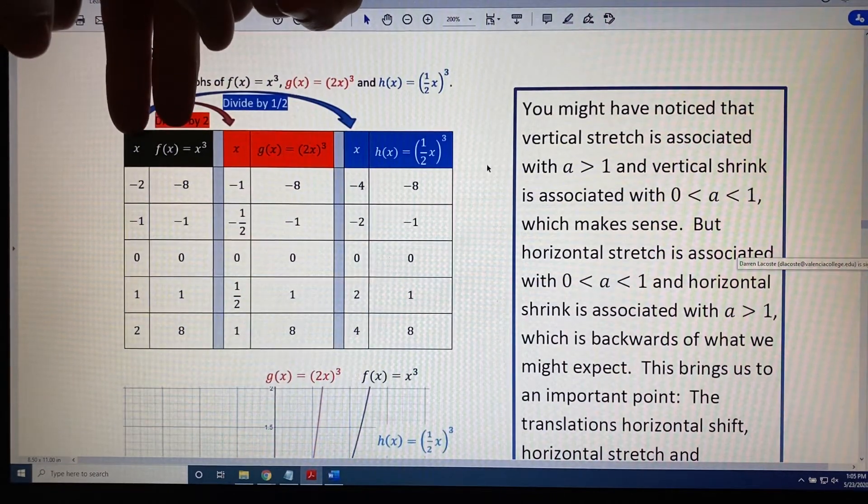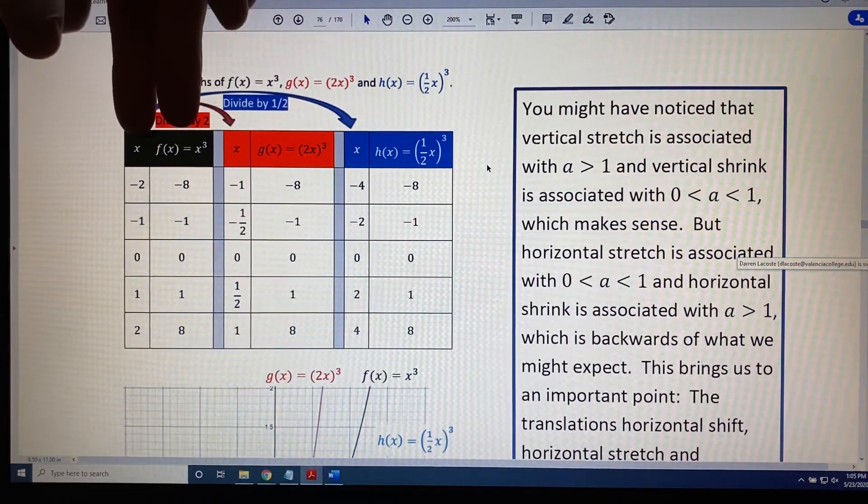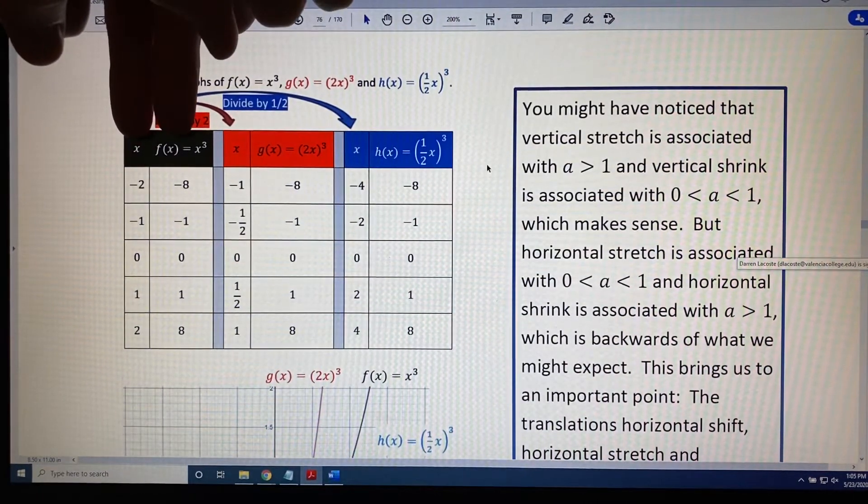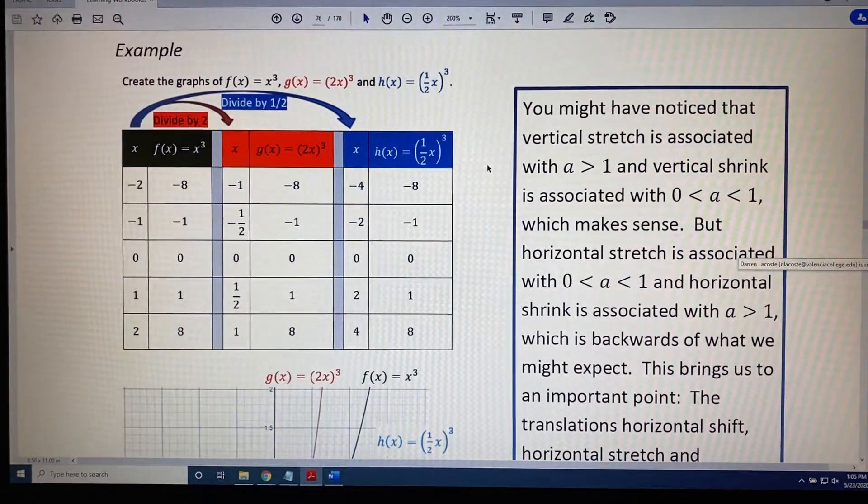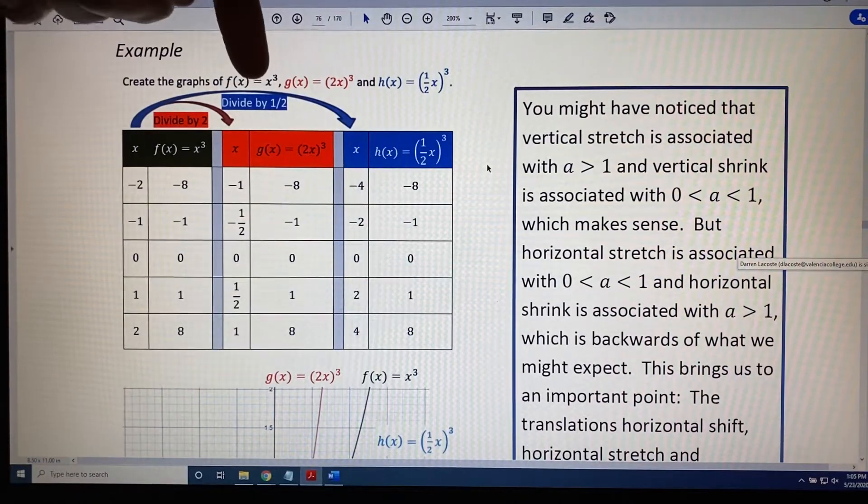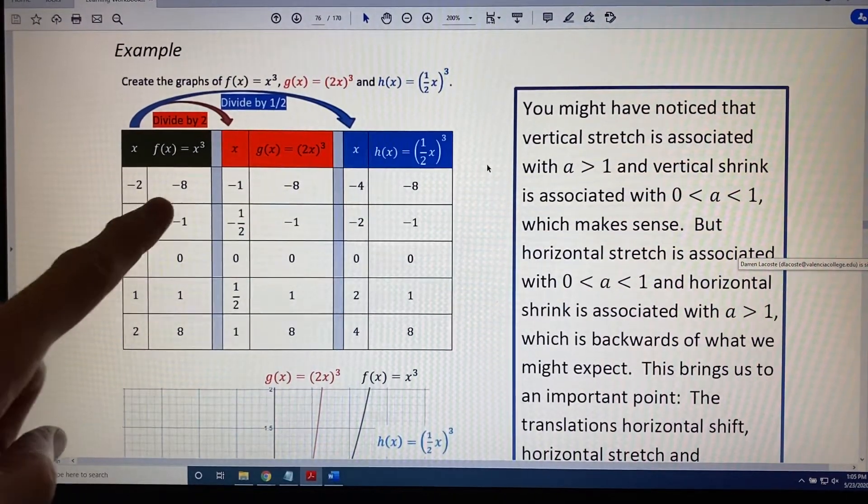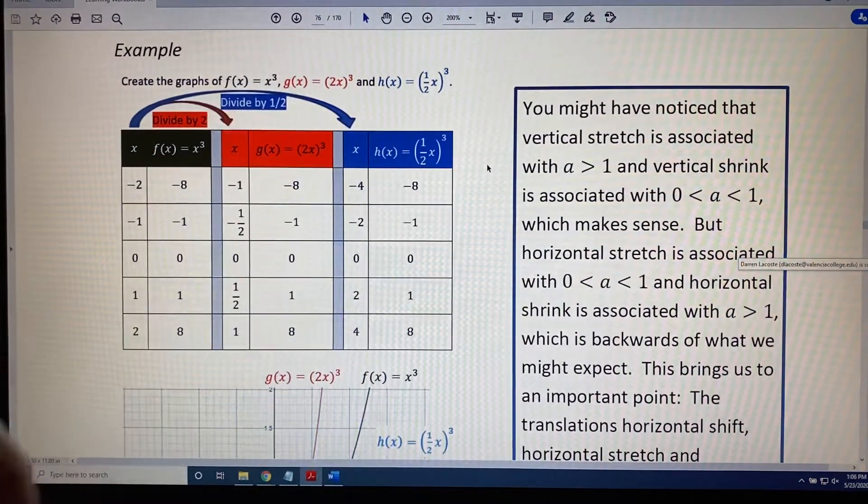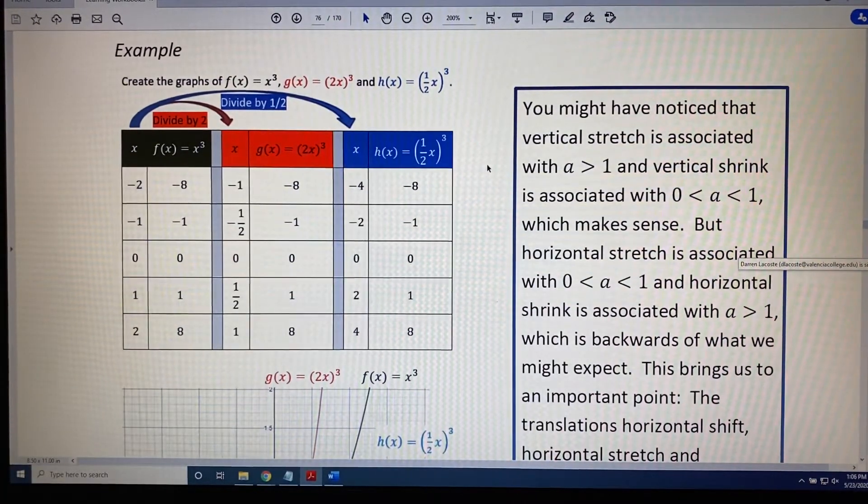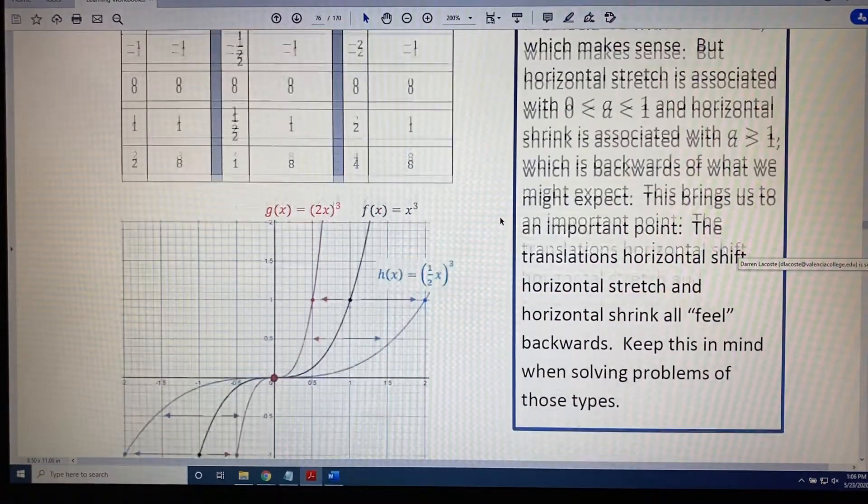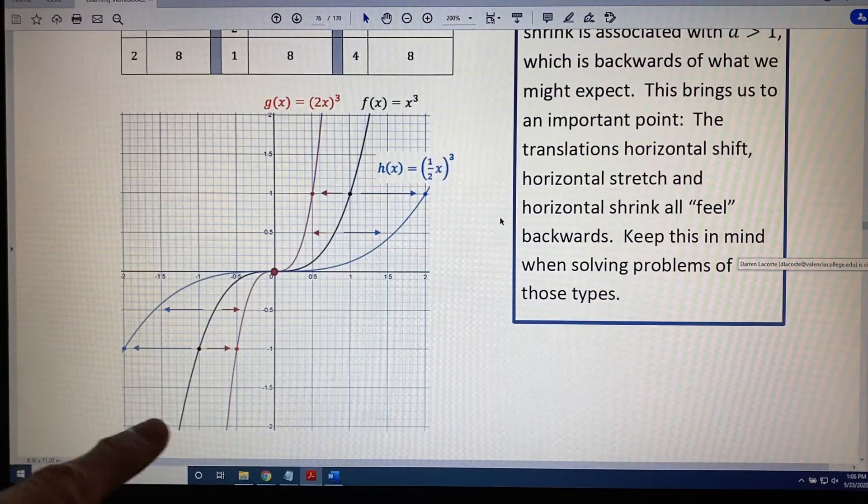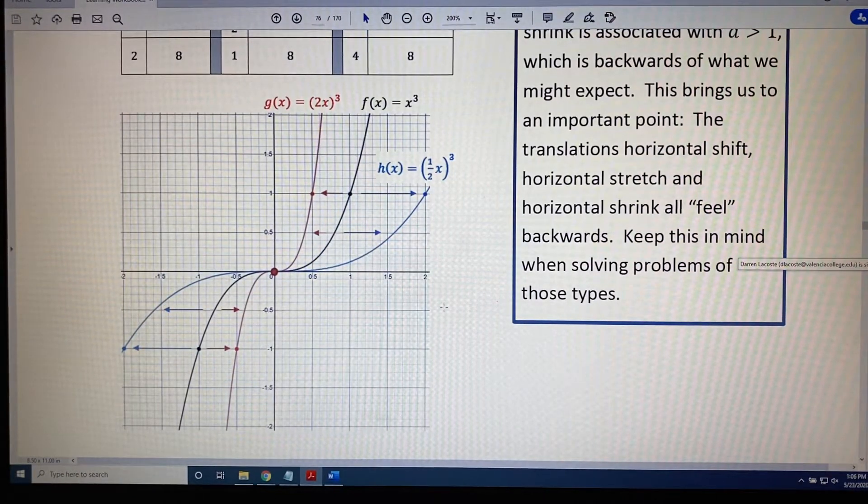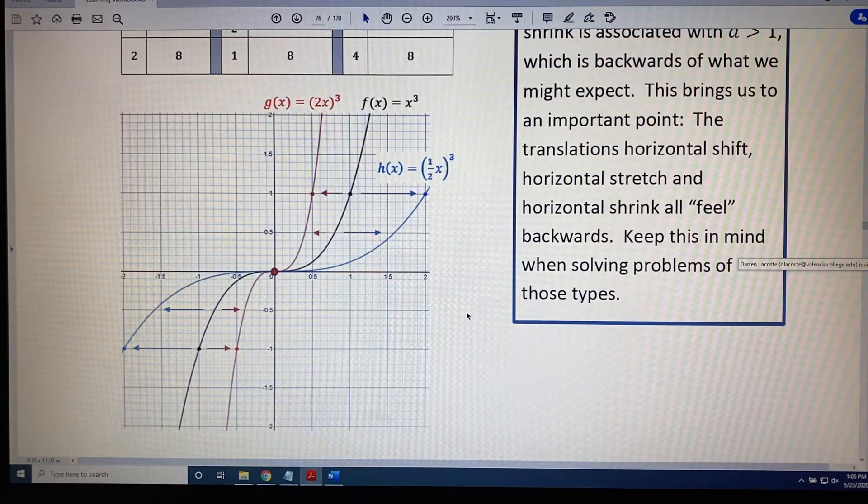These right here are the two columns of the table for the black function f(x) = x³. These are the x-coordinates, and these are the y-coordinates. By now I hope you understand the relationship between the two. X is the input. The action is cube. So if you cube negative 2, you get negative 8. If you cube negative 1, you get negative 1, and so on down the table. We can create the graph of the cube function using the techniques we've learned in previous videos. This black curve right here is our cube function f(x) = x³. This is where we're going to begin our process.